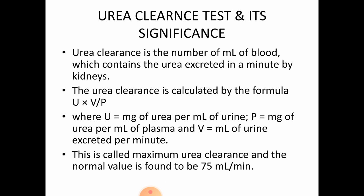First, the definition of urea clearance: it is the number of millilitres of blood which contains the urea excreted in a minute by the kidneys.